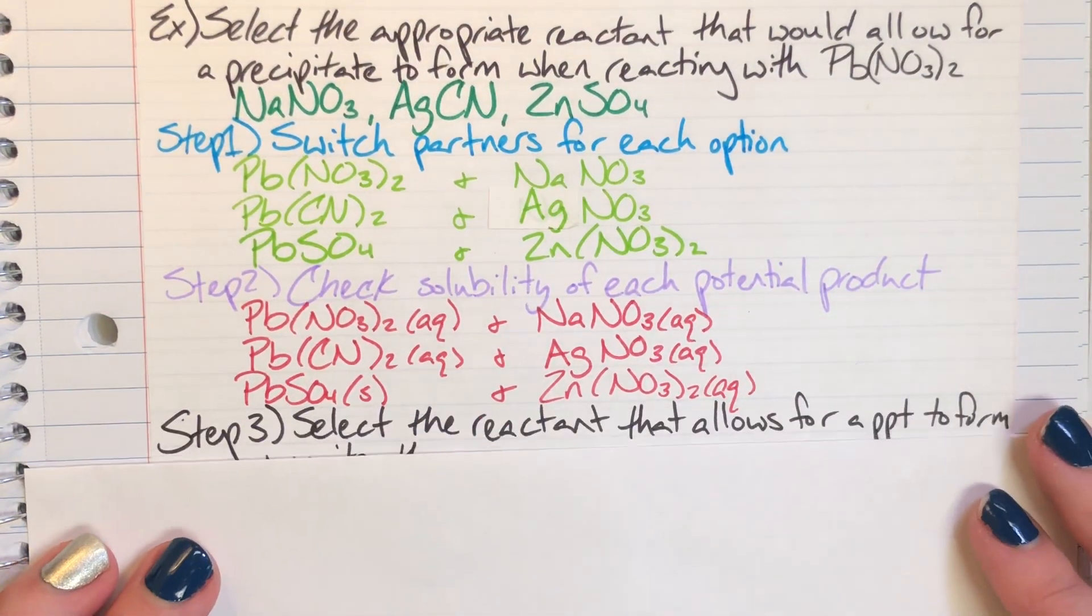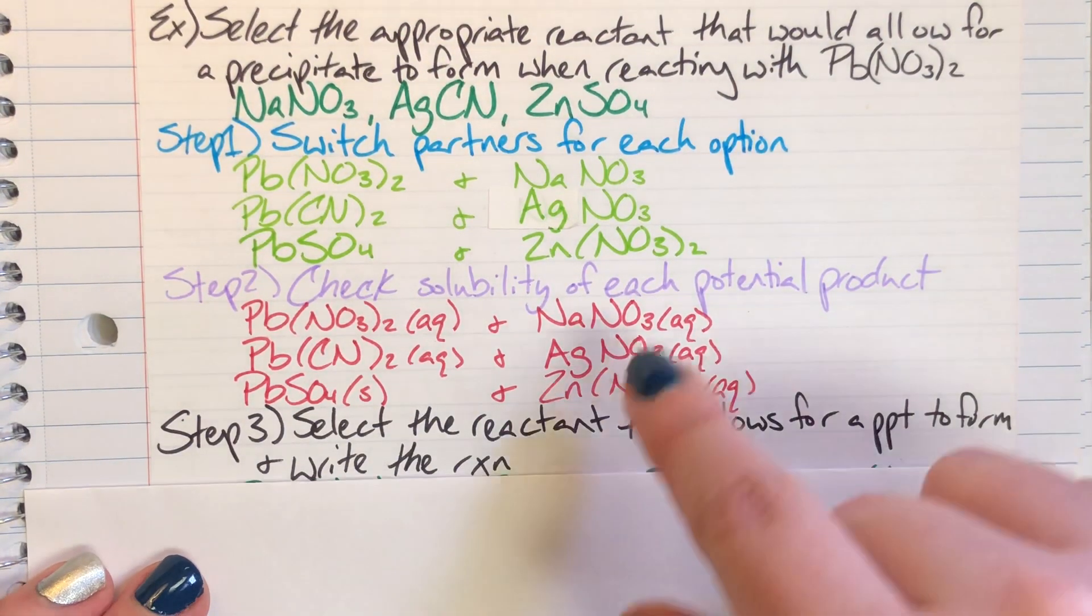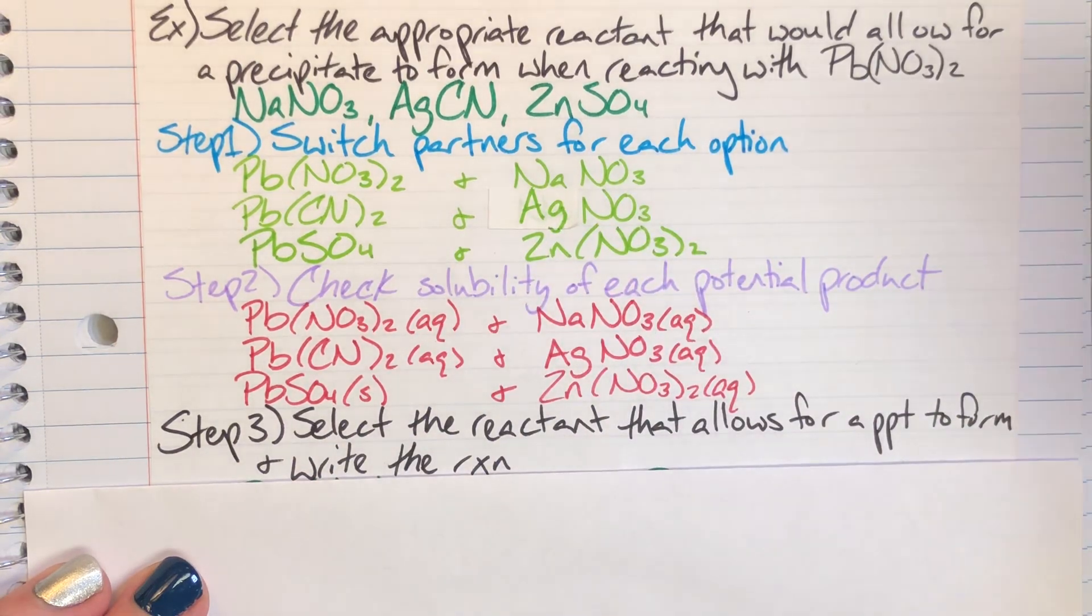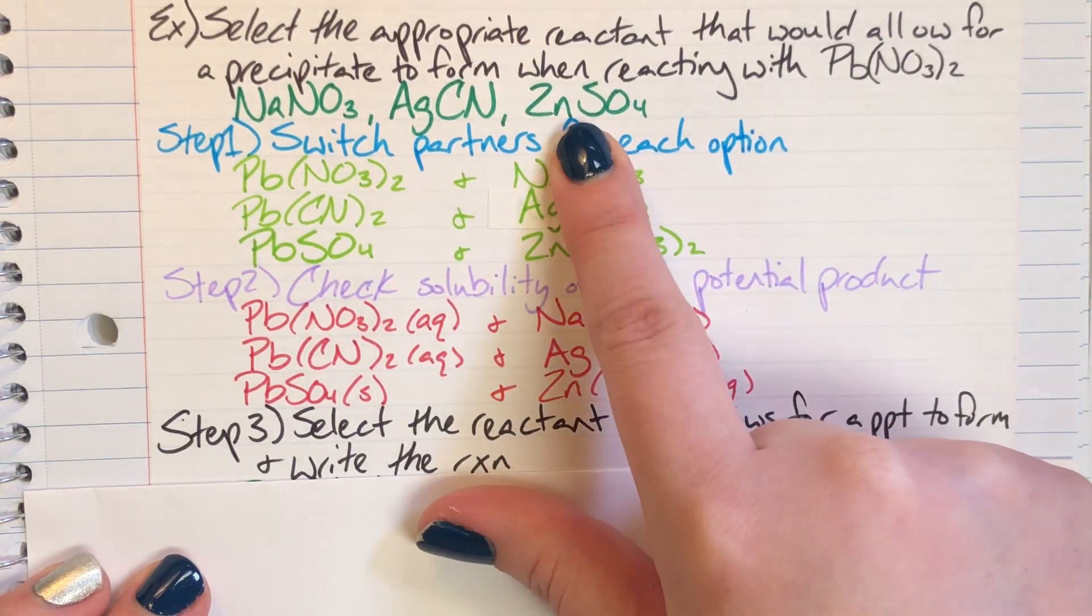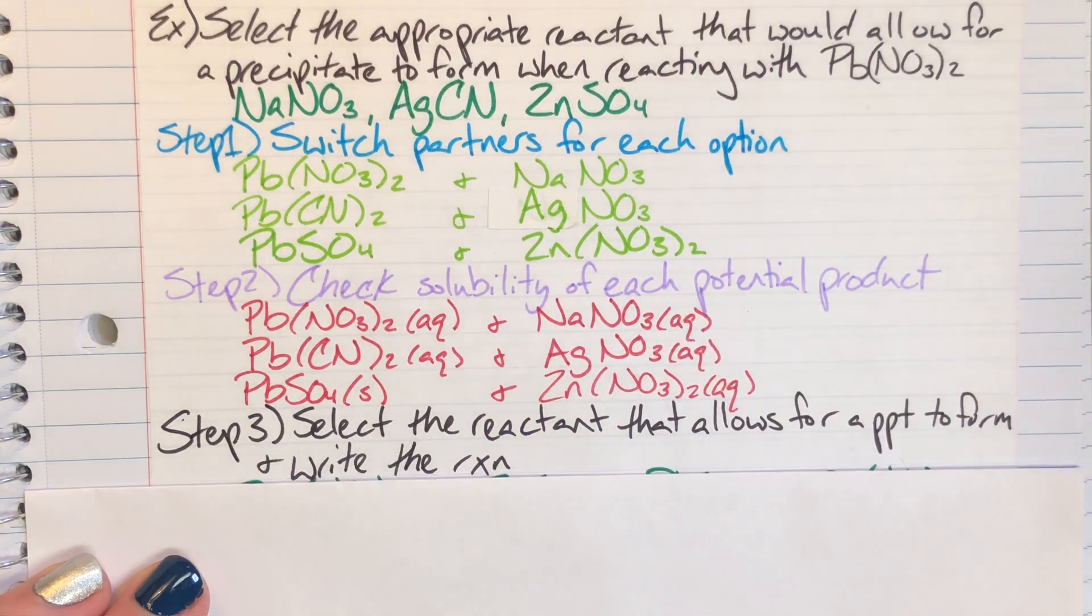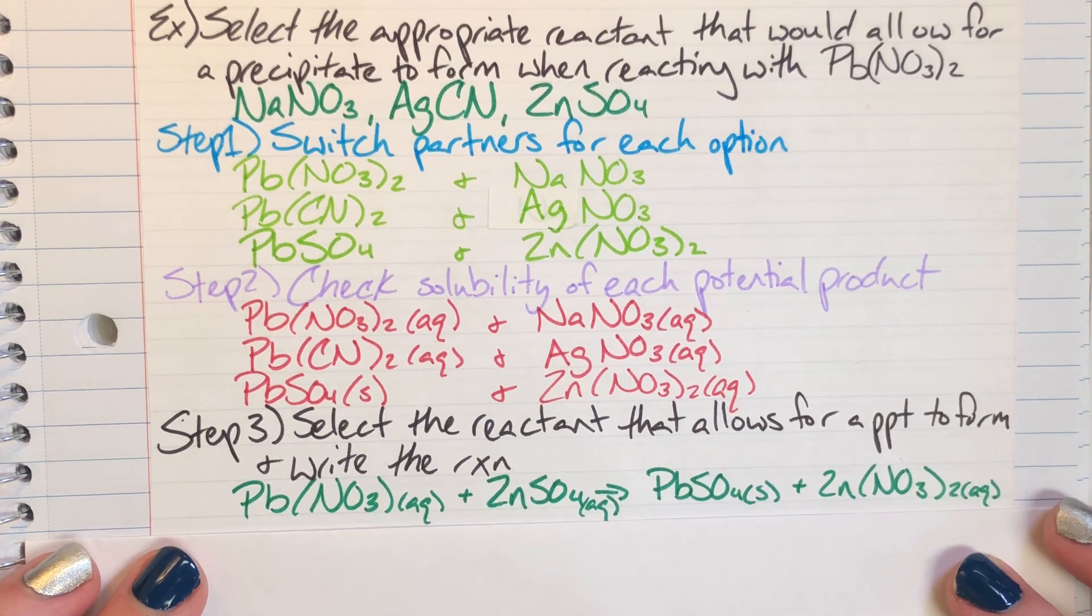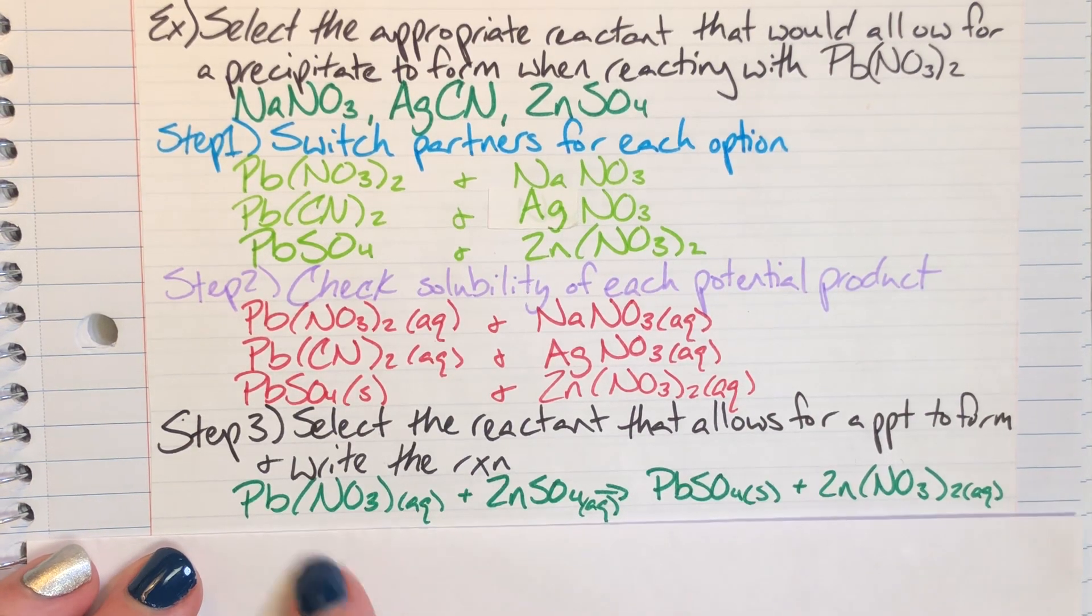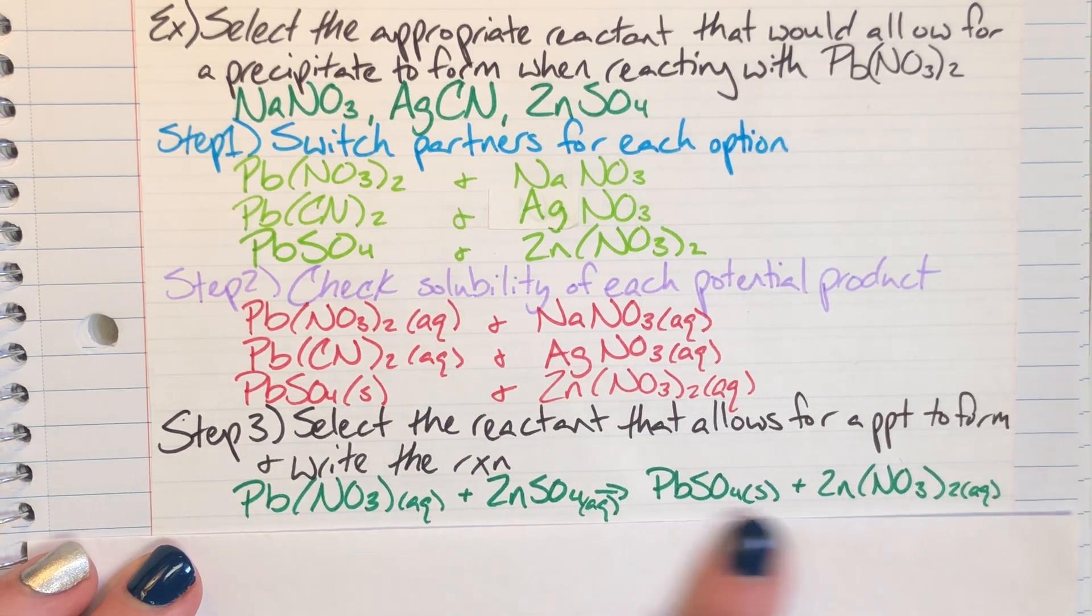Last thing I'm going to do is select that initial reactant that allowed me to produce a precipitate, which was that zinc sulfate, and I'm going to write the reaction out. I'm going to write the chemical equation. When I do that, I am going to make sure I have state signifiers for everybody and make sure that everybody's balanced.